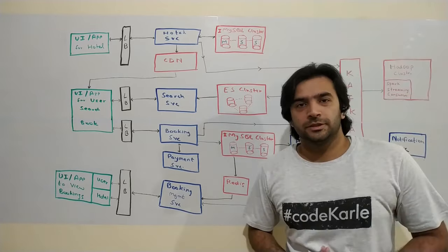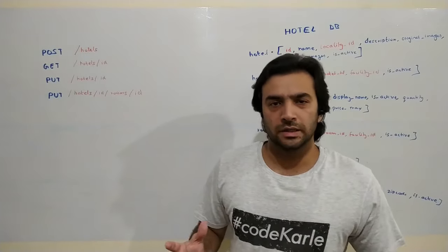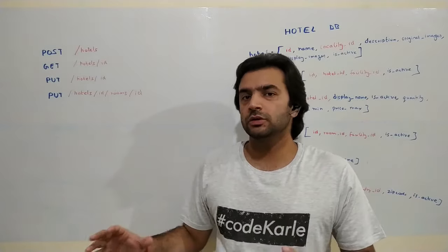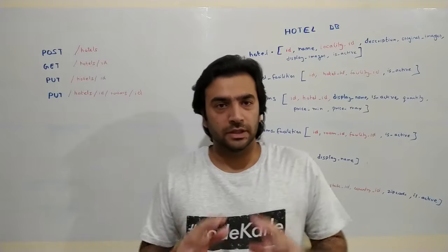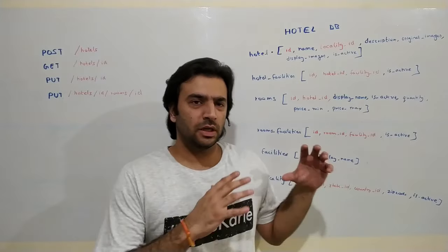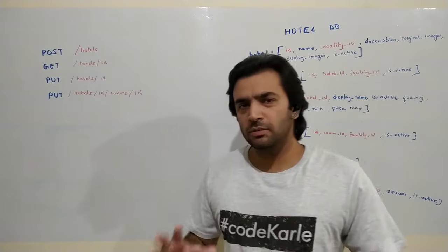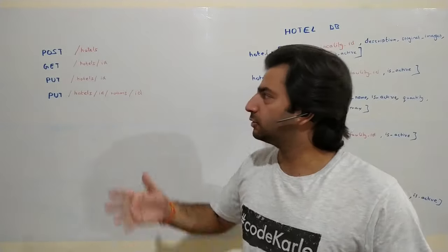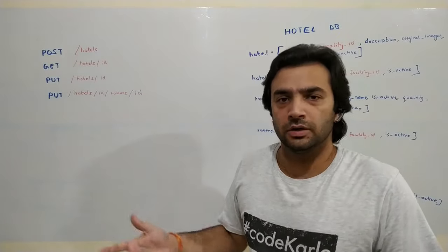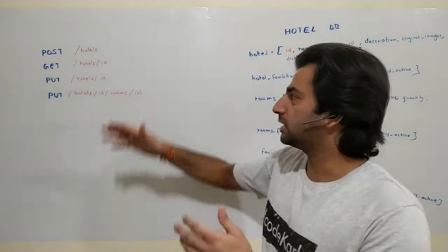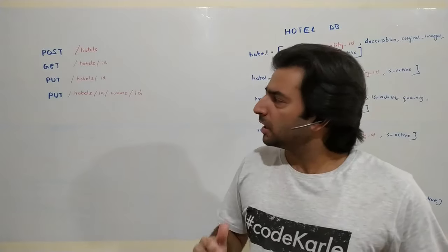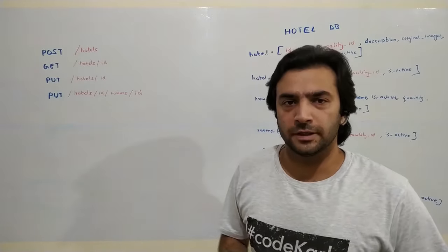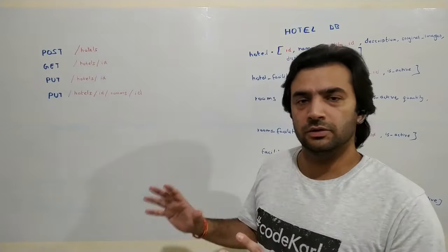Now let's go into details of some components. The hotel service is essentially a CRUD service — create, update, read, delete — on the hotel data store, and is the source of truth for hotel data. Key APIs include: POST /hotels to create a hotel during onboarding, GET /hotels/{hotel_id} to retrieve hotel info, PUT /hotels/{hotel_id} to update hotel information, and PUT /hotels/{hotel_id}/rooms/{room_id} to update or create room information.